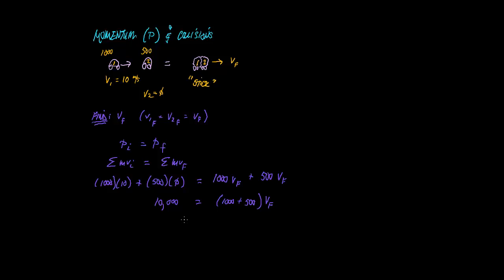If we able to take 10,000 and divide it by 1,500, we get 6.67 as V final meters per second. So that tells us the final velocity of the two vehicles right after they impact each other, ignoring friction and all other things.